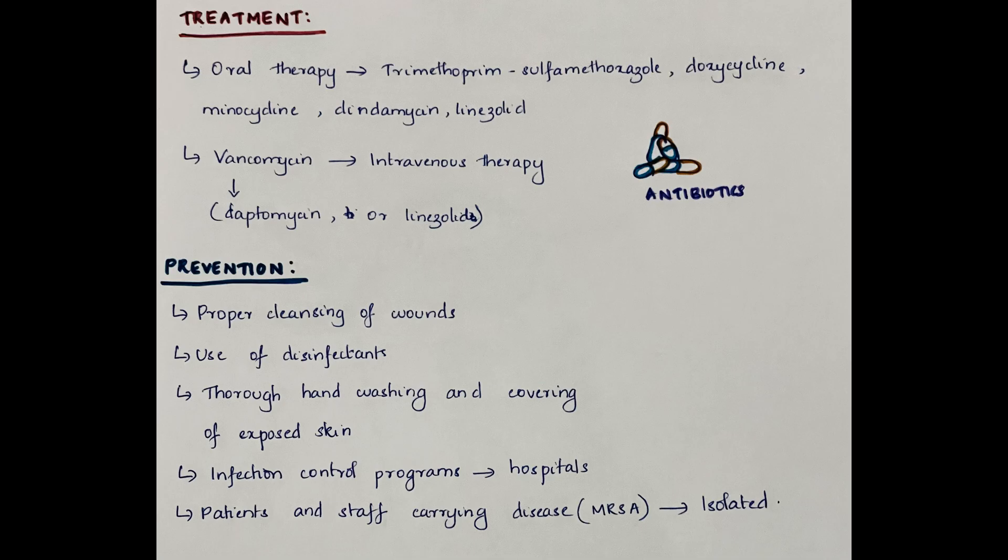Treatment of Staphylococcus aureus infection. Oral therapy includes trimethoprim-sulfamethoxazole, doxycycline, minocycline, clindamycin or linezolid. Vancomycin is the drug of choice for intravenous therapy with daptomycin or linezolid.